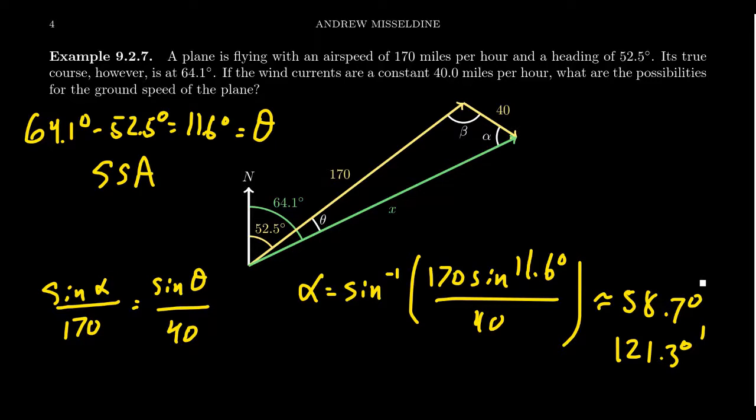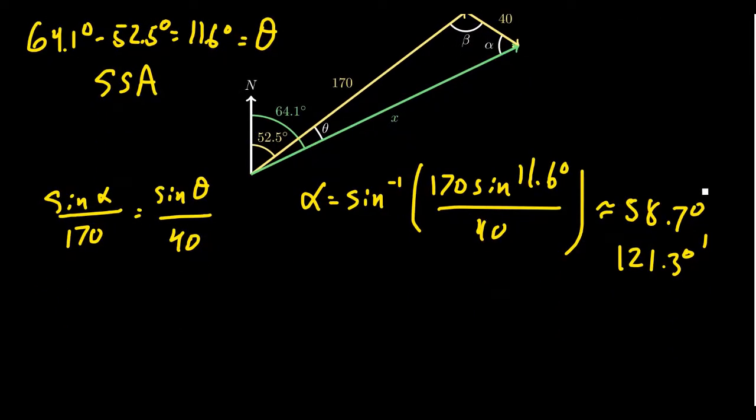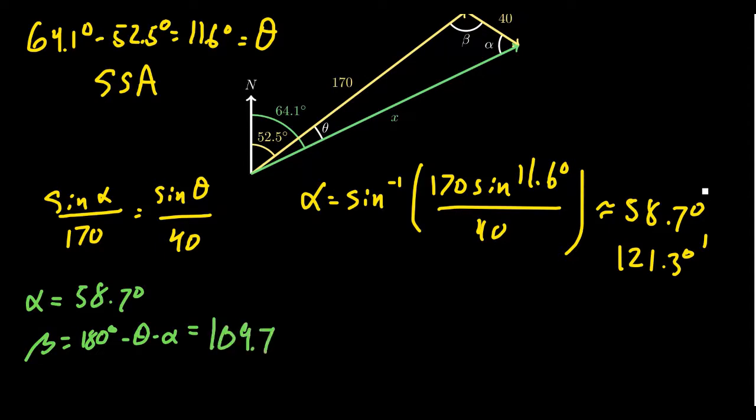Now, the first situation. Let's investigate that one. So the first situation is when alpha is 58.7 degrees. So since we already know theta, we can then solve for beta in this situation. So beta would equal 180, take away theta, which was 11.6, take away alpha, which is 58.7. This would mean that beta is 109.7 degrees. So that's acceptable. Nothing wrong with this so far.